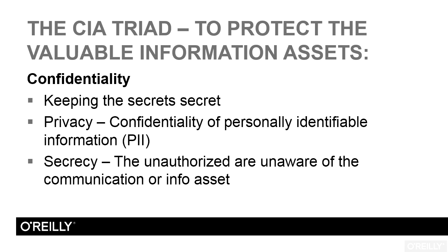The term specifically is confidentiality. There are two subsets of confidentiality, and that's trying to protect against the disclosure of this valuable information asset. The first aspect is called privacy. When the term privacy is used relative to information assets, it generally implies that we are protecting the personally identifiable information of an individual, holding that information as secret and confidential. Privacy deals with PII primarily.